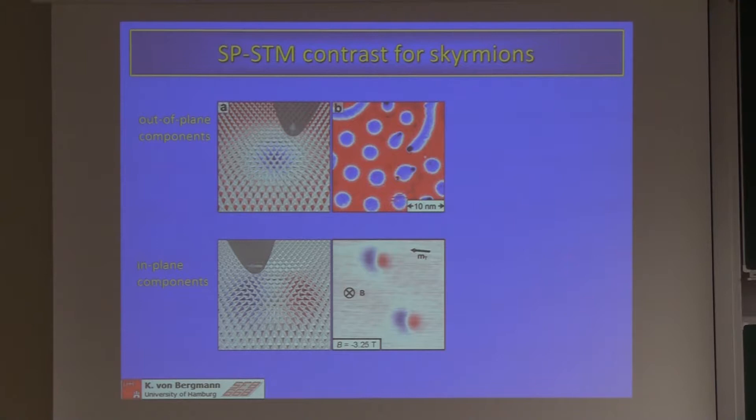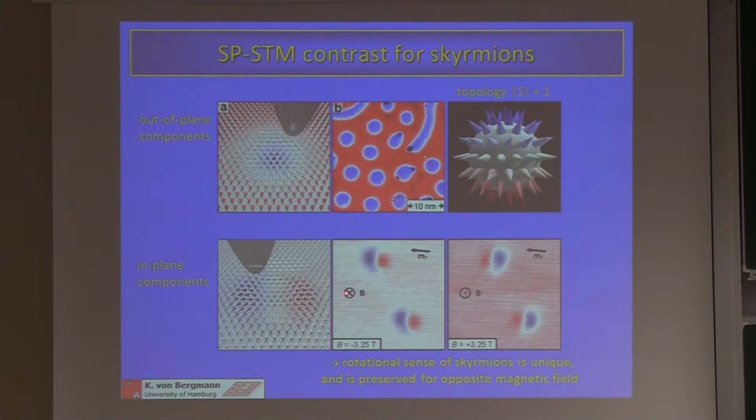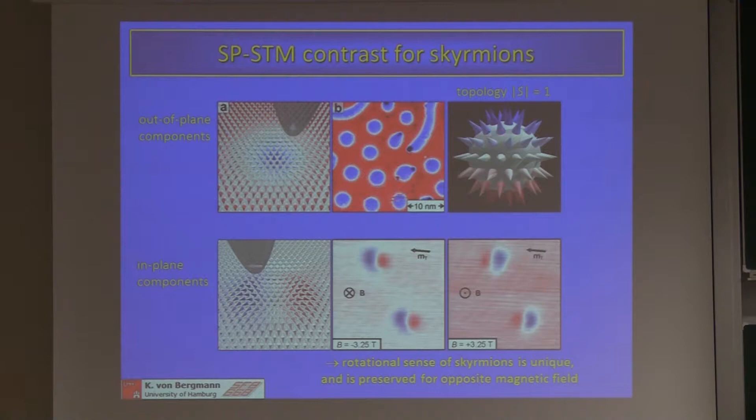If we invert the external magnetic field while keeping the tip magnetization fixed, all spins invert and the two-lobe structure changes contrast, exactly as expected for a unique rotational sense of the skyrmions. These are topological objects because you can wrap the spins exactly once around the unit sphere.